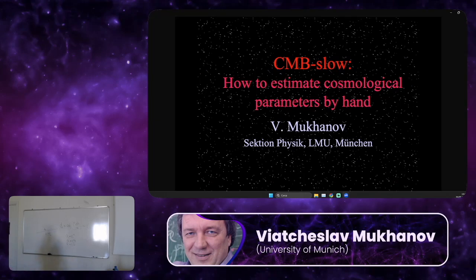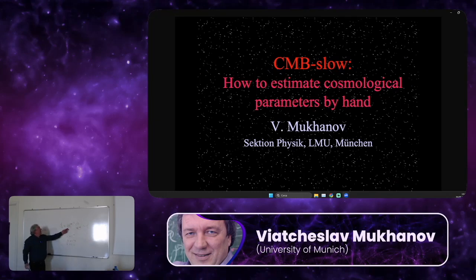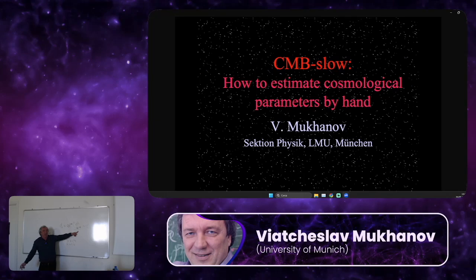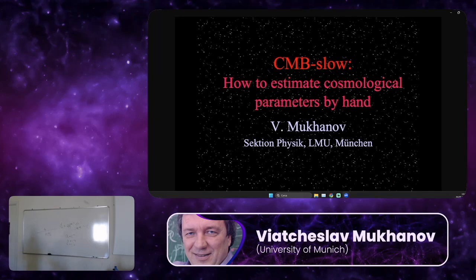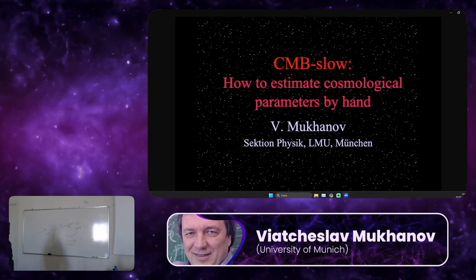If you have exponential expansion, you write exponent Ht here and exponent Ht in the denominator. The integral is convergent in this case, so the size of the causally connected region in an accelerated universe grows proportionally to the scale factor. This is the reason why some people speak about superluminal expansion — of course light is always propagating with the speed of light.